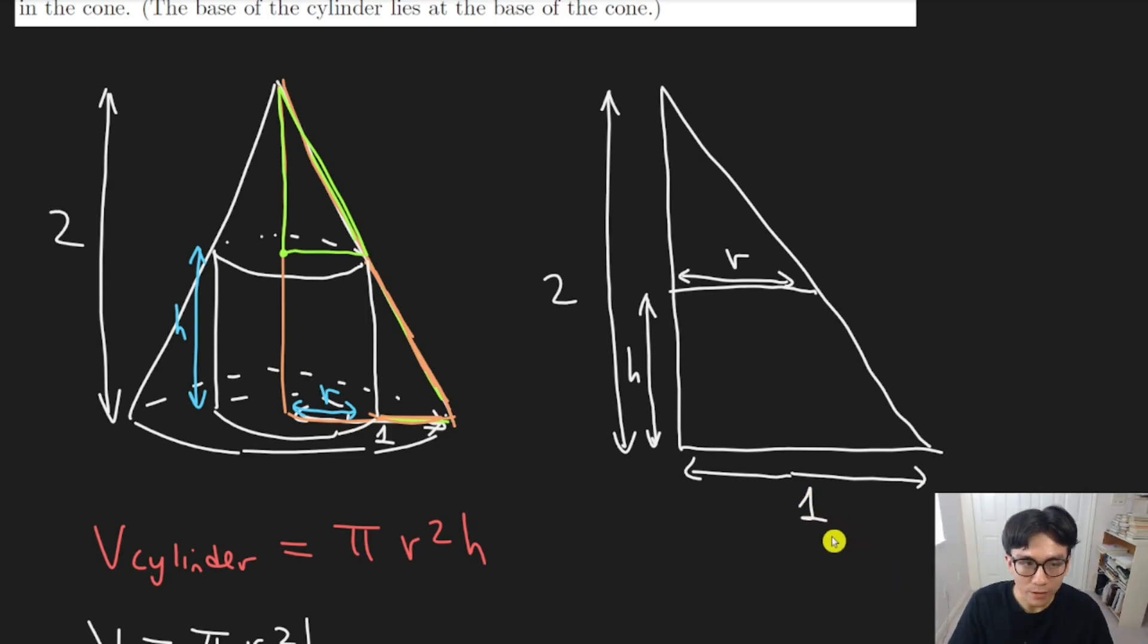Now we have to think about what similar triangles say. Well, it says the ratio of corresponding sides of the two triangles are equal. What that means is, for example, the ratio of the big height to the smaller height is going to be the same as the big base to the smaller base. So for example, we can have two divided by this length. Well, what's this length?